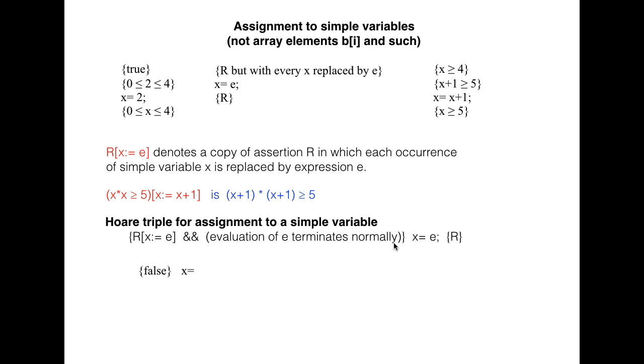For example, in this Hoare triple, the statement x becomes 6 divided by 0 always aborts. It never terminates with y equal 5, and thus the precondition is false. Evaluation of 6 divided by 0 does not terminate normally.